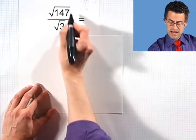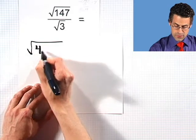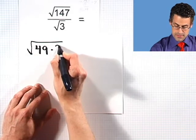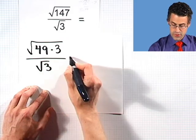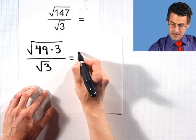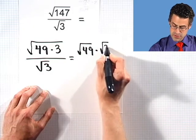It's to realize that I can factor the top a little bit. The top actually can be factored as the square root of 49 times 3, all over the square root of 3. Well, then I use that property that allows me to break up that product into two pieces.